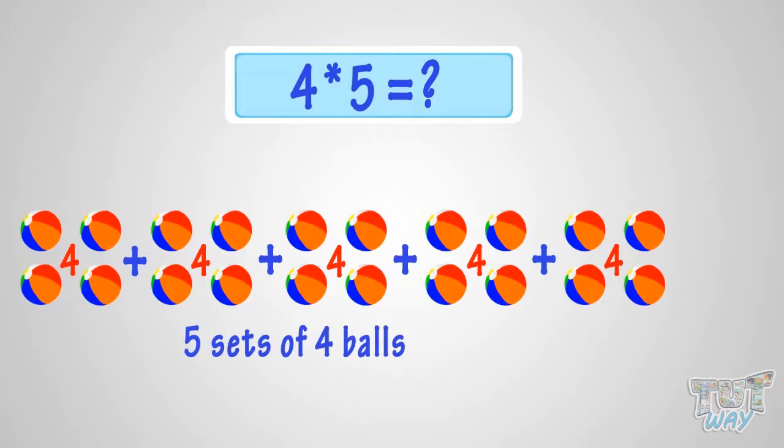What is four multiplied with five? It is the same as five sets of four balls. So, it is twenty balls. That is, four multiplied by five is twenty.